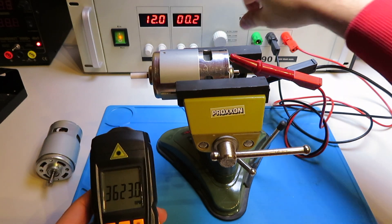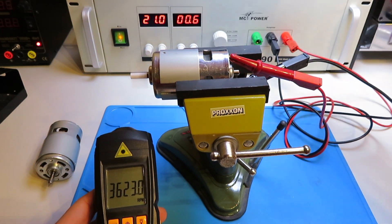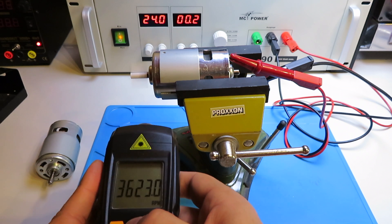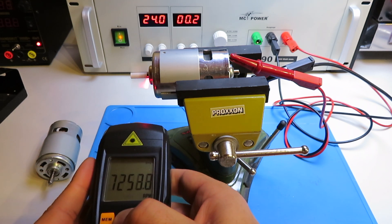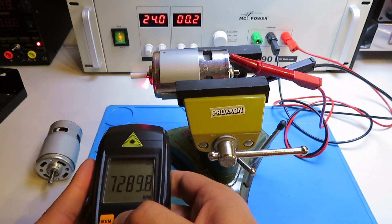So now let's have a look at 24 volts. 7,200 RPM.